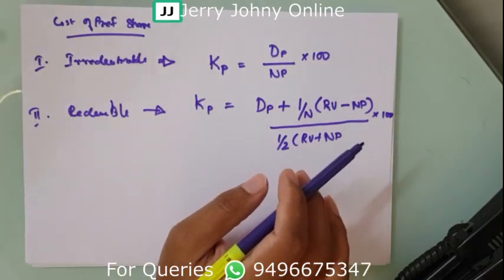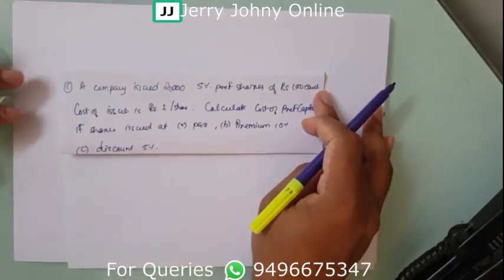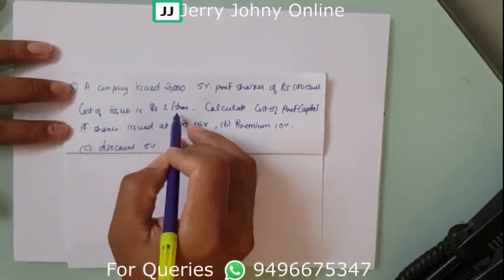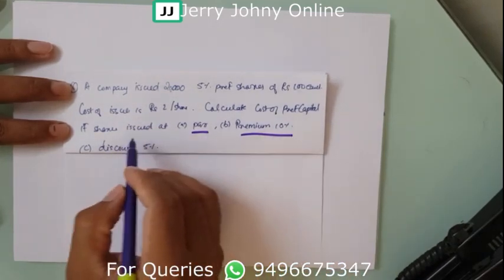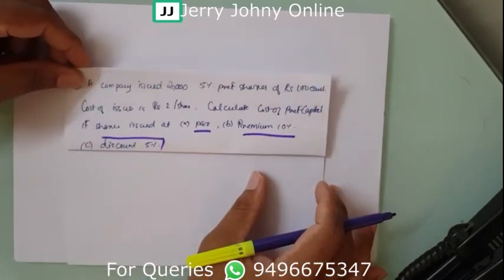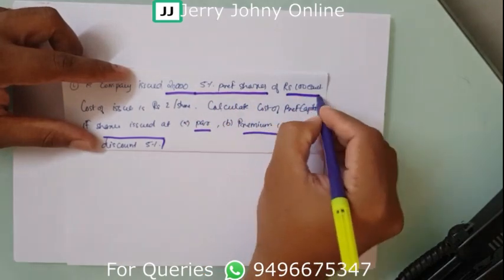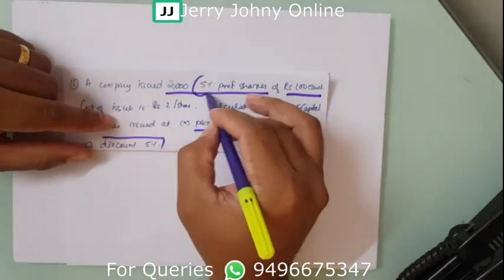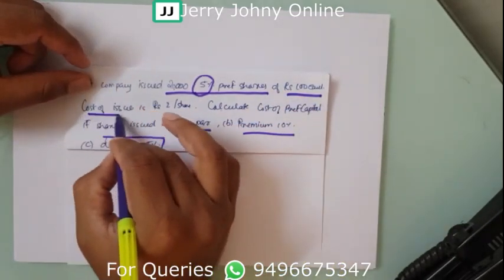If you have studied debt, the formula is similar — only replace interest with dividend. Now let us do a couple of problems. A company issued 20,000 5% preference shares of rupees 100 each. The cost of issue (flotation cost) is rupees 2 per share. Calculate the cost of preference capital.